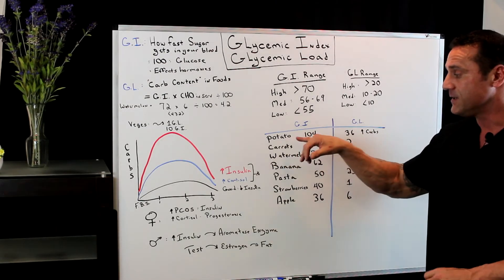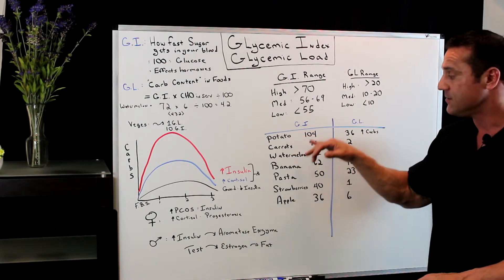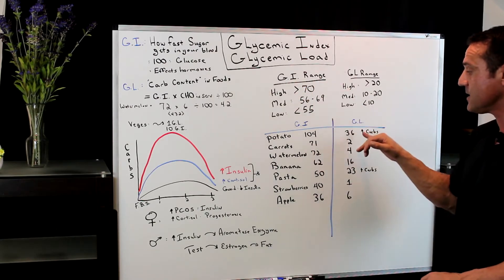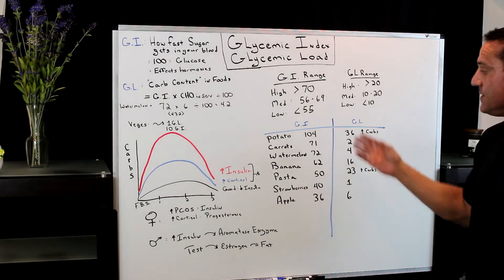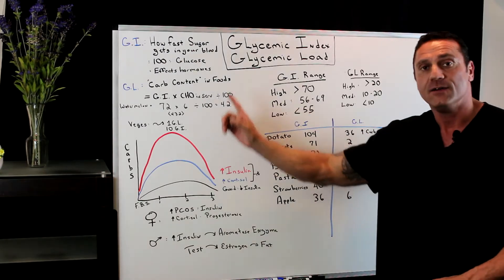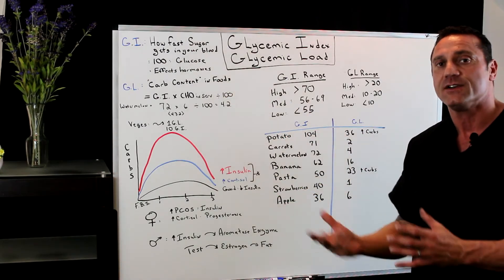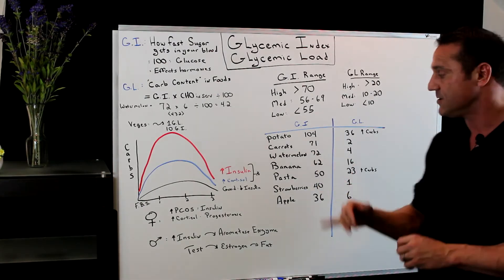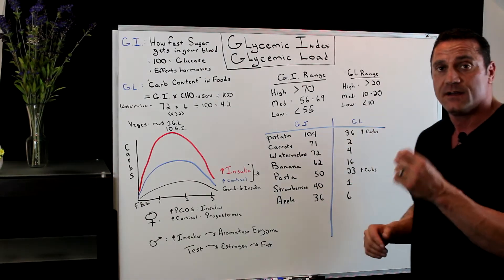The highest one is the potato. The potato has 104 glycemic range, and the glycemic load is 36. Basically, this means when you take a potato, this is really going to spike your insulin levels because the blood sugar is going to elevate. This is a really high carb type of food.